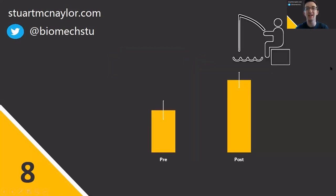Number eight is p-hacking. This is where investigators manipulate the analysis procedures in search of a significant result. This could be something as simple as removing individual data points or trying out multiple tests or dependent variables until they get the significant result they're looking for. Whilst it's difficult to identify after the fact, we can start to address this by avoiding changing hypotheses once the study has begun and ideally pre-registering the analysis plan beforehand.